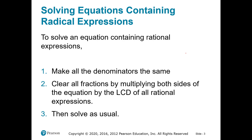Here's my recommendation. First, we make all the denominators look the same. After we do that, we actually get rid of the fractions — we want to clear the fractions by multiplying both sides, multiplying everything by that common denominator, because it's quicker to solve an equation without fractions than with fractions. Then we're going to be left with an equation that's very easy for us to solve.